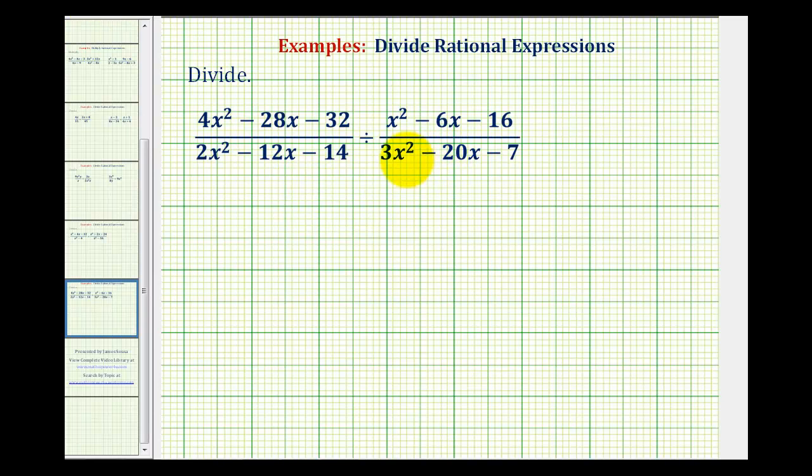To divide rational expressions, we write the division problem as a multiplication problem by multiplying by the reciprocal of the divisor. To do this, the first fraction stays the same. We'll have 4x squared minus 28x minus 32 all over 2x squared minus 12x minus 14. And now we'll change the division to multiplication.